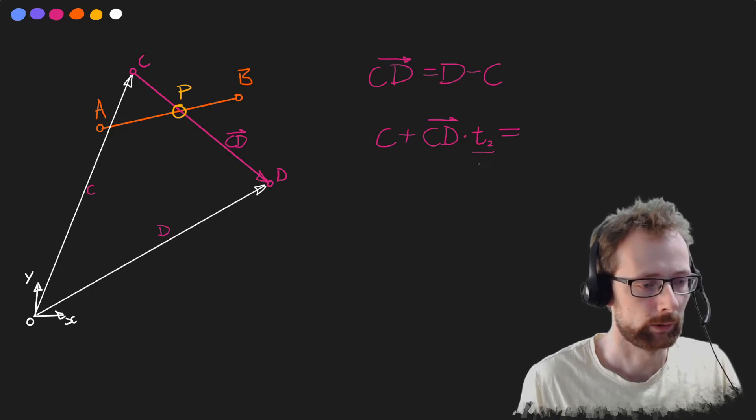If t2 was 0, then we would end up at c, right? If t2 were 1, well then it's just the same equation as before, so we would end up at d.